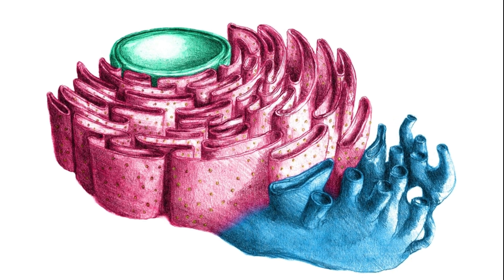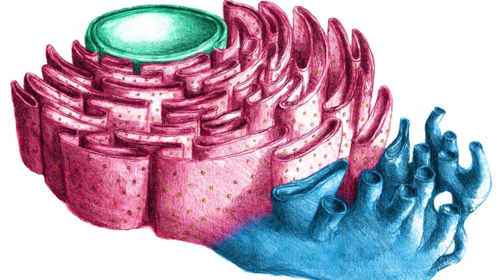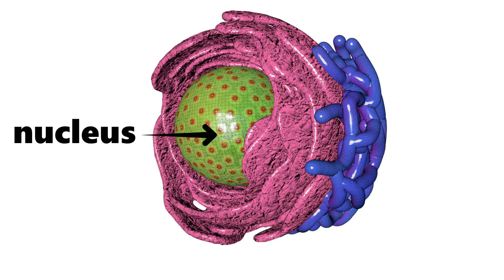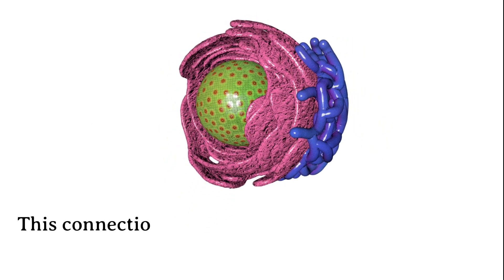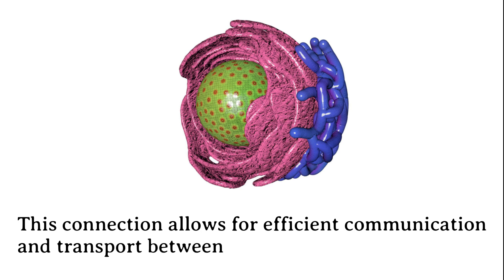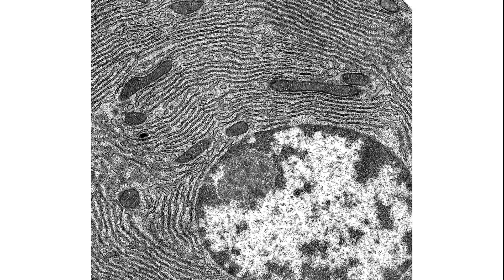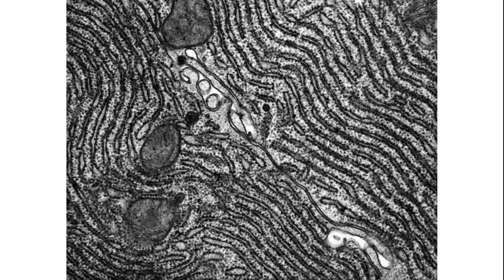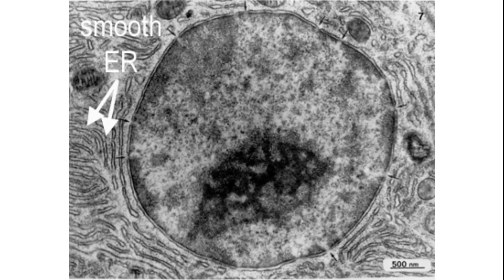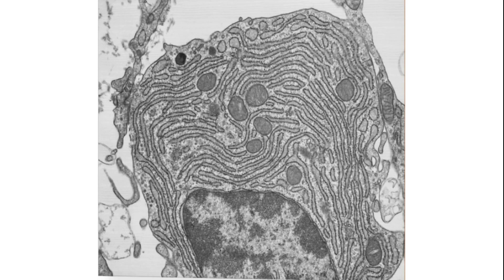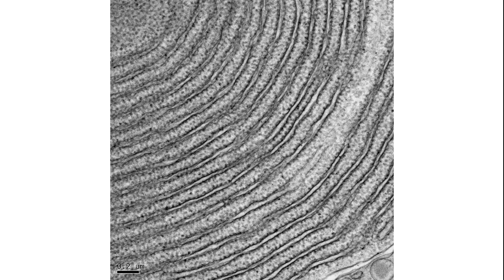Now that we understand the fundamental functions of the endoplasmic reticulum, let's shift our focus to some captivating facts about this organelle. Did you know that the endoplasmic reticulum is interconnected with the nuclear envelope? This connection allows for efficient communication and transport between the nucleus and the endoplasmic reticulum. The endoplasmic reticulum is a highly dynamic structure — it can expand or contract depending on cellular needs, adapting to changing conditions. The smooth ER found in liver cells of vertebrates is particularly specialized in detoxification processes, which is crucial for removing harmful substances from the body.